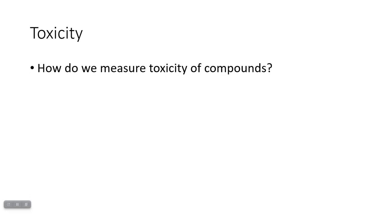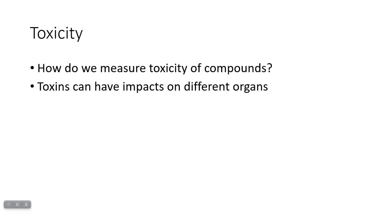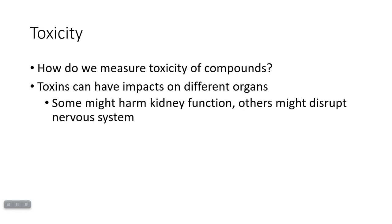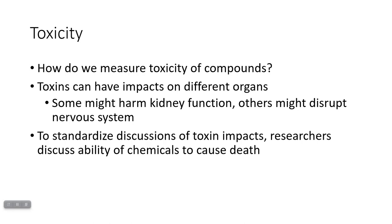How do we measure how toxic compounds are? We've been talking about pollutants for the past couple of units, and we've been talking about their effects on the health of humans. But toxins can have impacts on different organs — one might harm kidney function, another might disrupt the nervous system — and so it's hard to compare the effects of these various toxins.